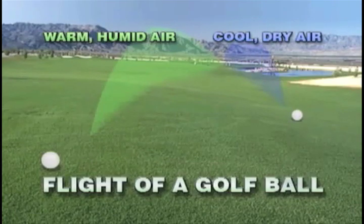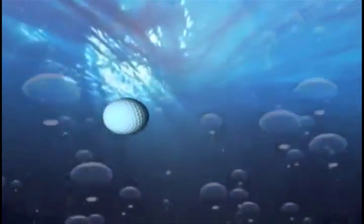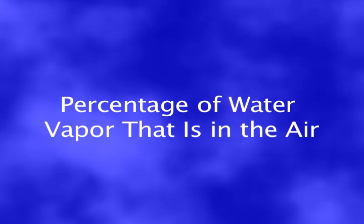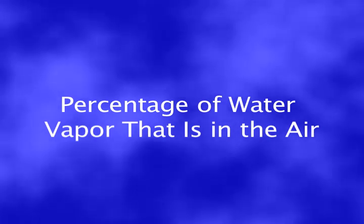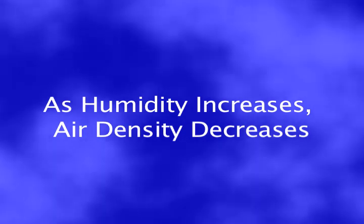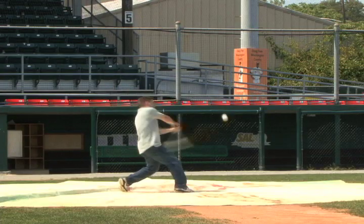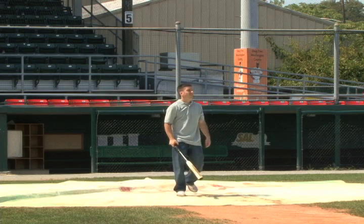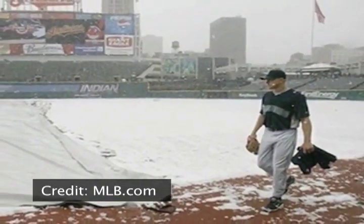Humidity acts the same as temperature. The higher the dew point and in result humidity, the less dense the atmosphere is and the further that ball can travel. Humidity is a measure of the percentage of water vapor in the air. An increase in humidity has a surprising effect on air density — as humidity increases, air density decreases. Some people often think that a hot muggy day will make the ball slow down, thinking a ball would go farther on a dry day than on a humid day. It's actually the opposite.